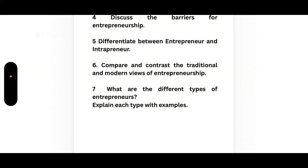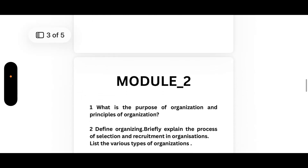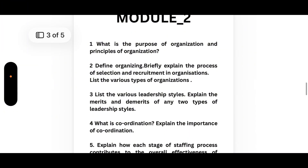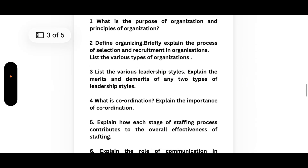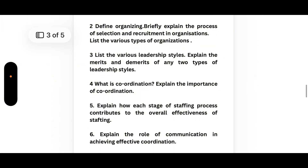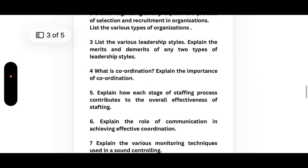Now coming to Module 2, we have eight questions. First, what is the purpose of organization and what are the principles of organization? Second, define organizing and briefly explain the process of selection and recruitment in organizations. Third, list the various types of organizations. Fourth, list the various leadership styles and explain the merits and demerits of any two types. Fifth, what is coordination? Explain the importance of coordination.